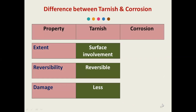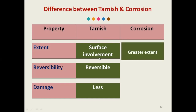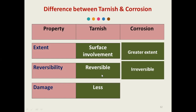Let us see the differences between tarnish and corrosion. According to extent, tarnish involves only the surface, but in corrosion there is greater involvement, with formation of corrosion products and dissolution of the restoration. According to reversibility, tarnish is reversible but corrosion is irreversible. Damage is seen less in tarnish, while damage is more in case of corrosion.